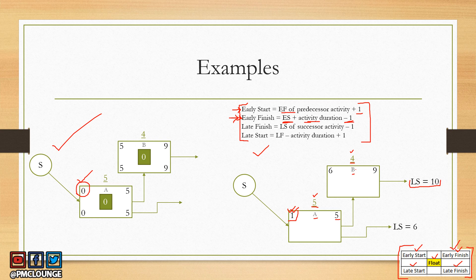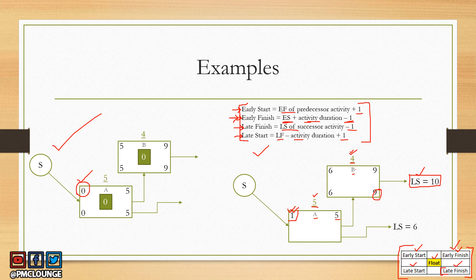For the backward pass, we need the late start of the successor activity, which is ten. To calculate late finish for activity B, we use: late finish = late start of successor − 1 = ten minus one = nine. To calculate late start for activity B, we use: late start = late finish − duration + 1 = nine minus four plus one = six. So the late start for activity B is six.